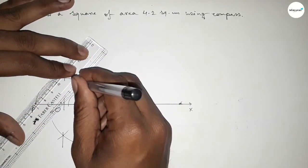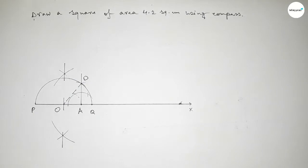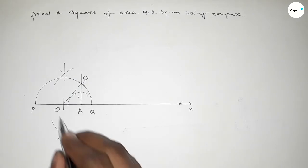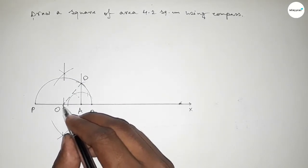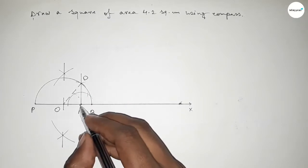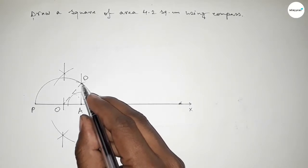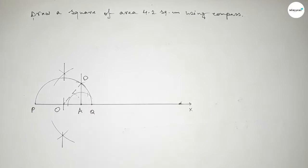Join O and D, which is the radius of the semicircle. From the right angle triangle OAD, OD is the hypotenuse, OA equals the base, and AD equals the height. Therefore, the value of AD equals √4.2 centimeters.